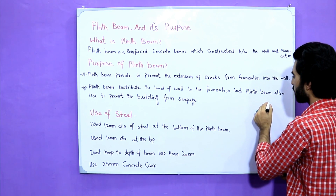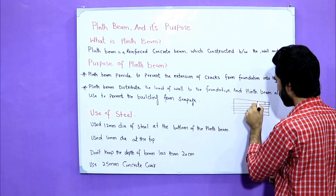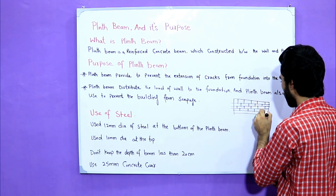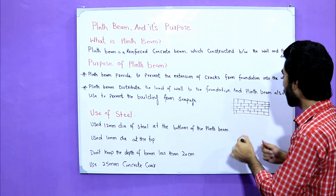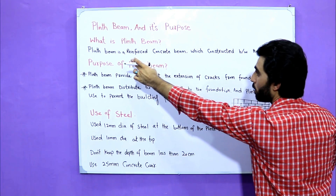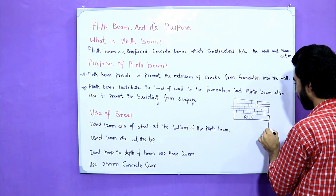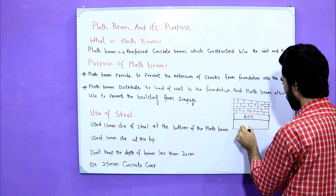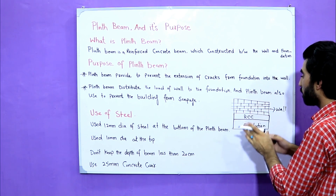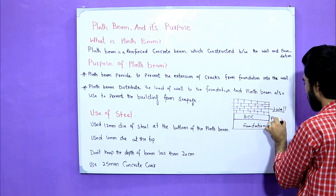For example, this is the wall — brick masonry, meaning wall. Now this one is the plinth beam. Plinth beam is a reinforced concrete beam, an RCC — reinforced cement concrete beam. And this is the foundation. So plinth beam is a reinforced beam which is constructed between the wall and foundation, which is called plinth beam.